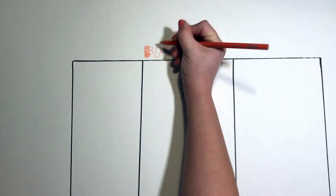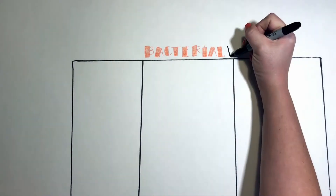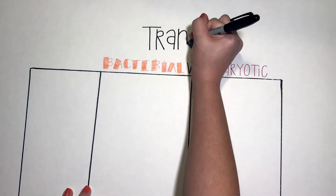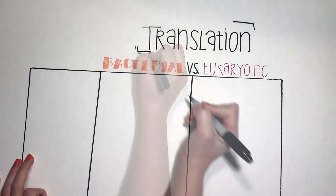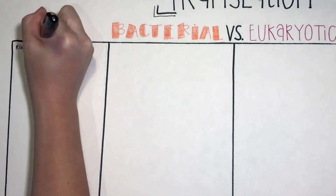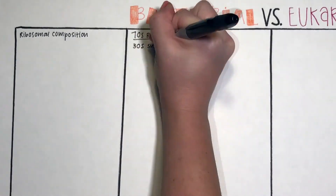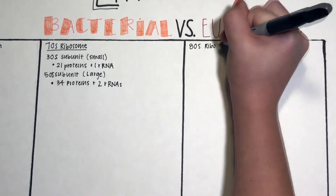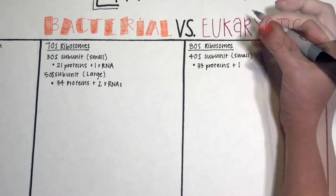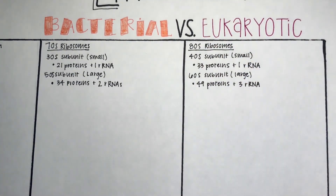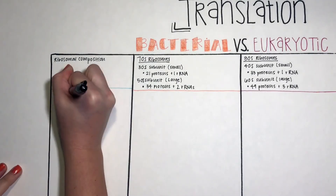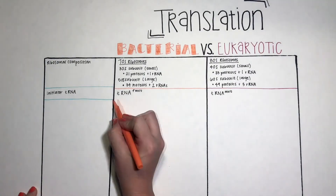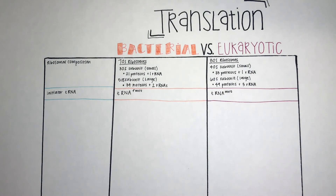Bacteria and eukaryotes differ significantly when it comes to translation. For ribosome composition, bacteria have 70S ribosomes — a 30S subunit with 21 proteins plus 1 rRNA, and a 50S subunit with 34 proteins plus 2 rRNAs. Eukaryotes have 80S ribosomes — a 40S subunit with 33 proteins plus 1 rRNA, and a 60S subunit with 49 proteins plus 3 rRNAs. The initiator tRNA for bacteria is tRNA-fMet, and for eukaryotes it is tRNA-Met.